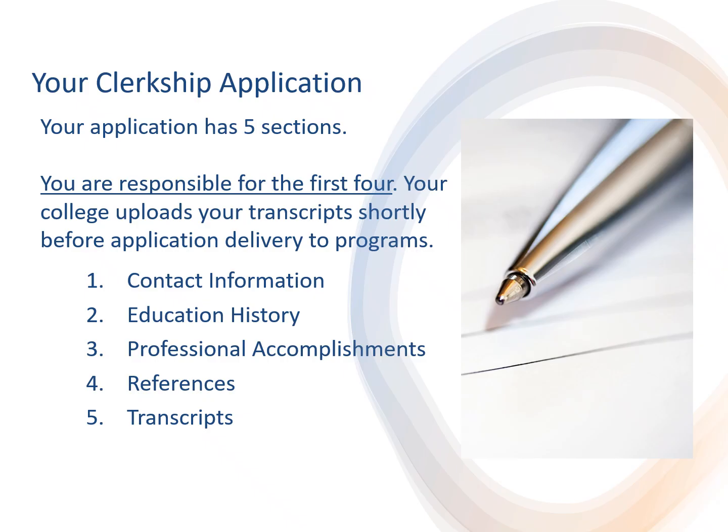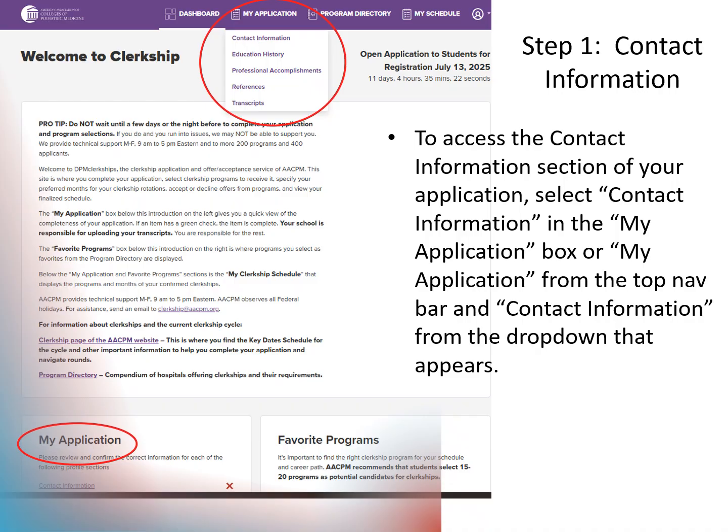Again, your college uploads transcripts, GPA, and class rank. Step one is your contact information and the participation agreement. To access the contact information form, select contact information in the My Application box or My Application from the top navigation bar and contact information from the drop-down that appears.